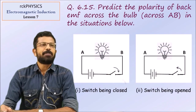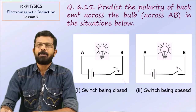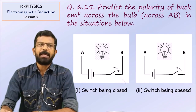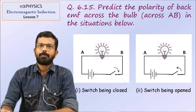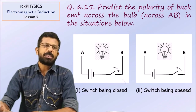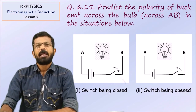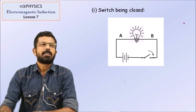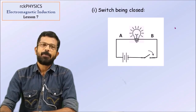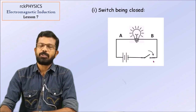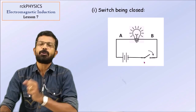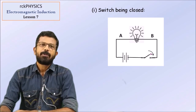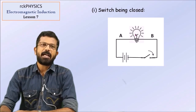Two situations are given. Predict the polarity of the back EMF across points A and B. First situation: the switch is being closed. You have a bulb connected to a battery through a switch. The switch was open; now you are going to close it. When the current was zero, the battery will send a current through the bulb and the bulb will glow. The current in the circuit will increase.